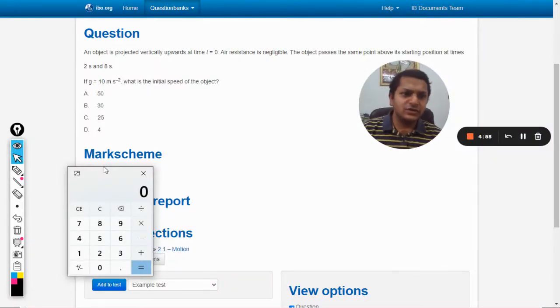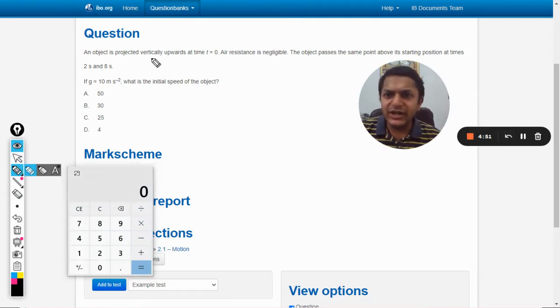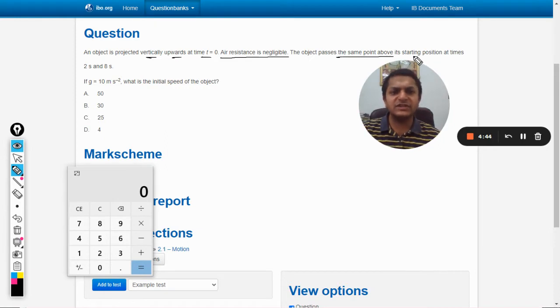Okay, so in this question an object is projected vertically upwards at t equals zero. Air resistance is negligible. The object passes the same point above its starting position at times two seconds and eight seconds. So basically what is happening...